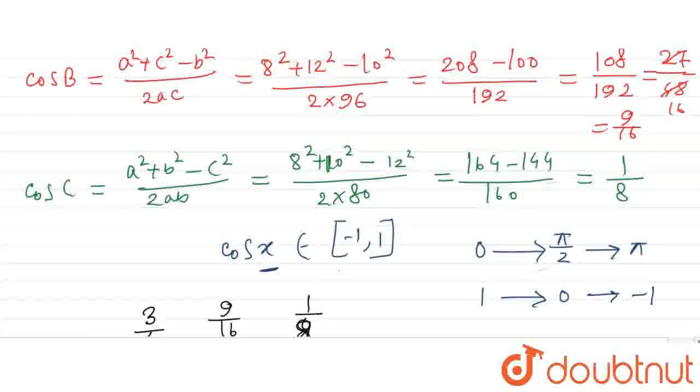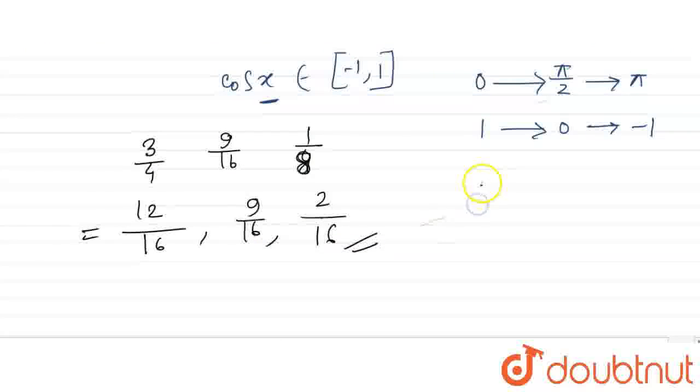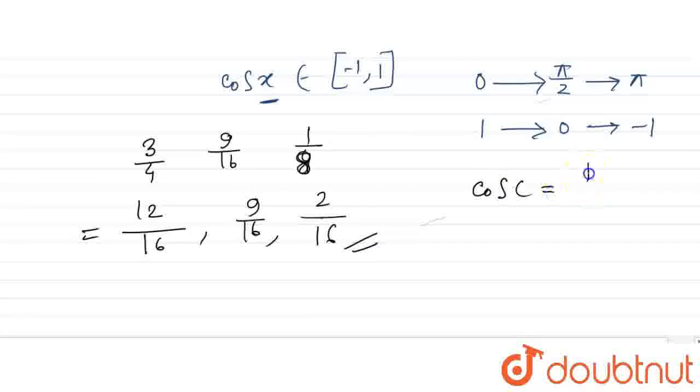And this is the value of cos C equal to 1 by 8. What is the value of angle C? Capital C is equal to cos inverse 1 by 8. This is my final answer. Thank you.